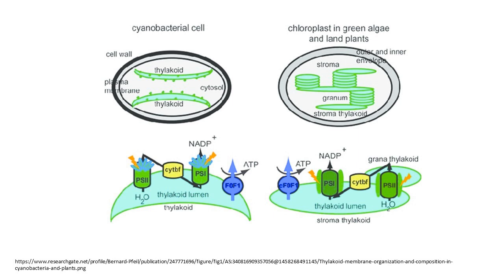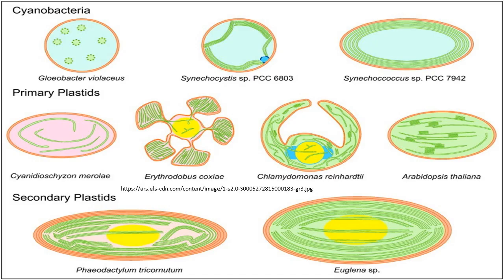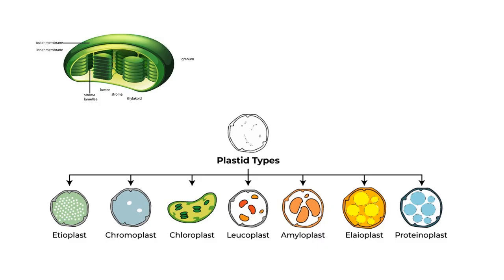Phototrophic eukaryotes, such as green plants, perform photosynthesis in plastids. These are thought to have their ancestry in cyanobacteria acquired long ago via a process called endosymbiosis. These endosymbiotic cyanobacteria in eukaryotes then evolved and differentiated into specialized organelles such as the chloroplast, chromoplast, etioplast, and leucoplast, which are all collectively known as plastids.